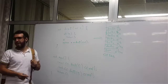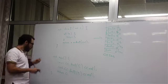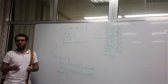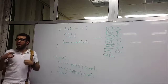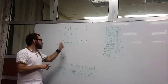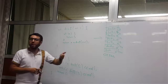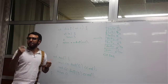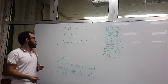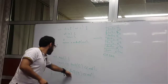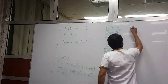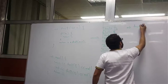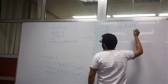Tail recursion is a special type of recursion in which, instead of making manipulations or additional operations on the result of the recursive call, we return the result directly. So imagine we are writing our factorial function in tail recursion style.